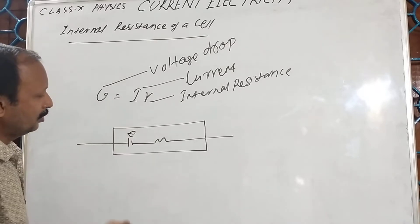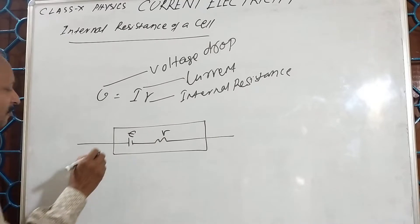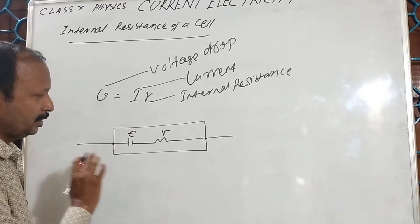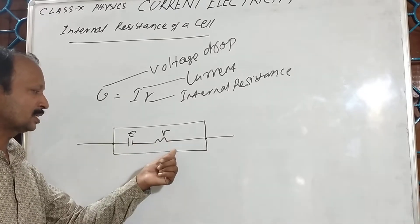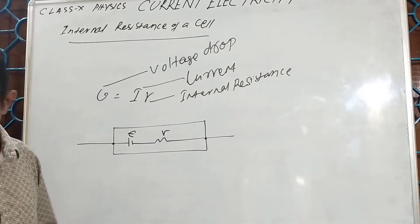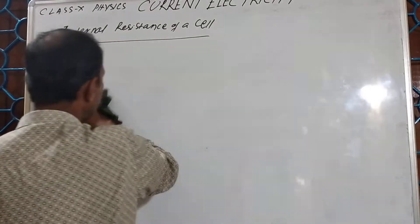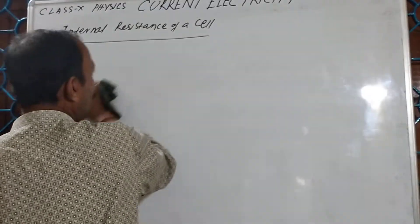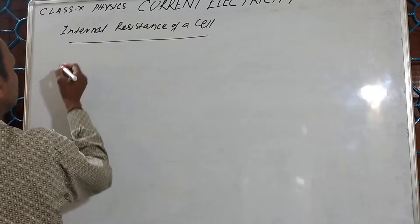This is the electromotive force, this is the internal resistance of a cell, and these are the two terminals. We express the internal resistance of the cell in this form. Now let us move to the relationship between electromotive force, terminal voltage, and internal resistance.